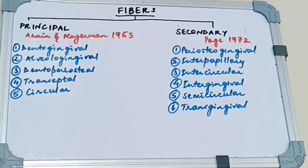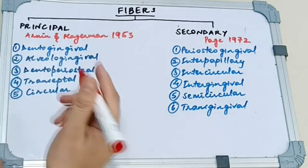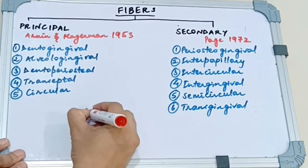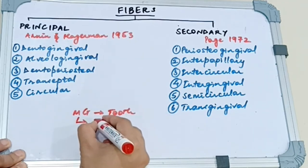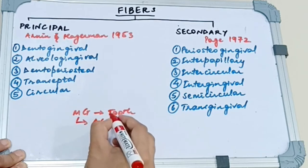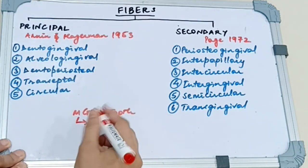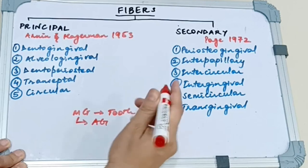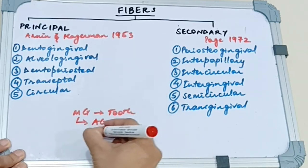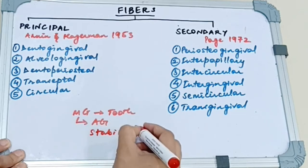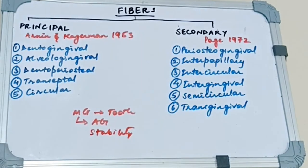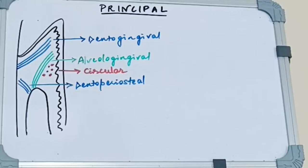Now the main functions of these fibers is to brace the marginal gingiva to the tooth, unite the marginal gingiva to the adjacent attached gingiva, provide rigidity required to withstand the masticatory forces, provide stability to the tooth and also help to maintain the epithelial seal around the tooth. We will check them out individually now.